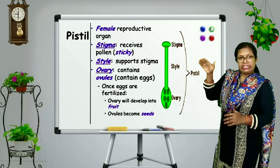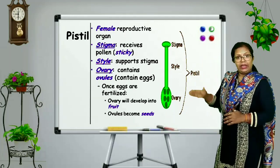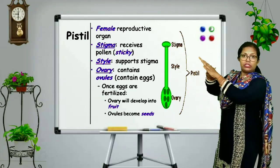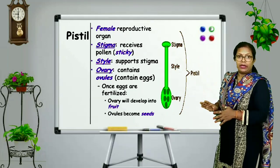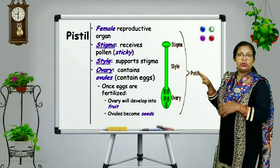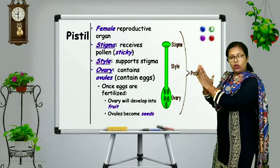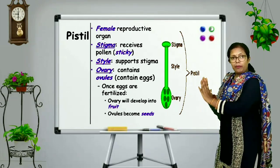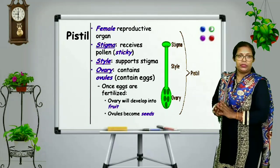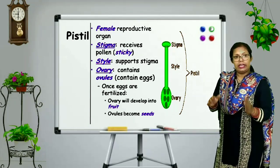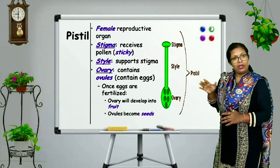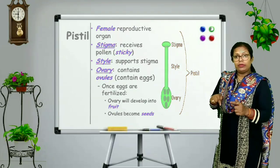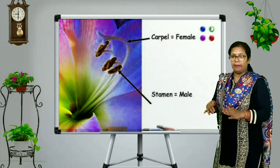The gynoecium is made up of three parts: stigma, style, and ovary. Stigma is the uppermost and wider part of the pistil. After stigma there is a long tubular structure known as style. The basal, broader part is known as the ovary. Inside the ovary, eggs are present, and this egg is the female nucleus or female gamete.